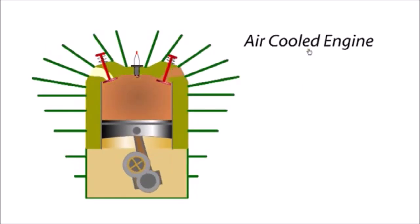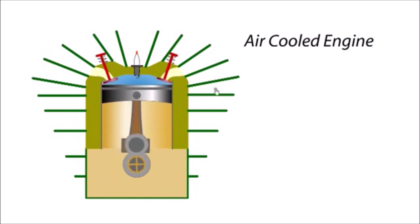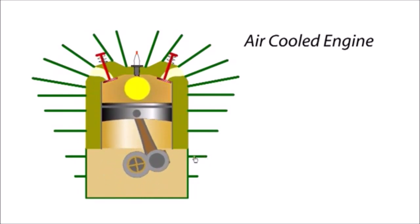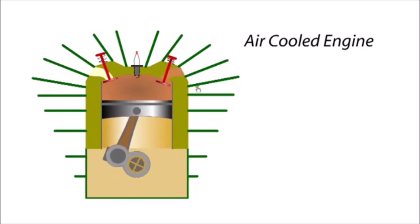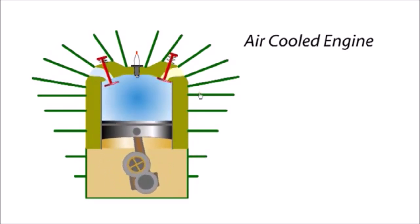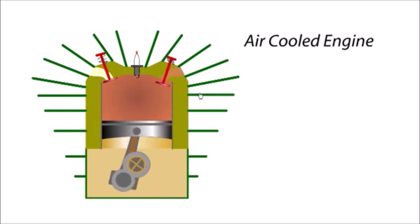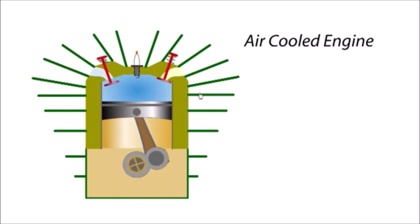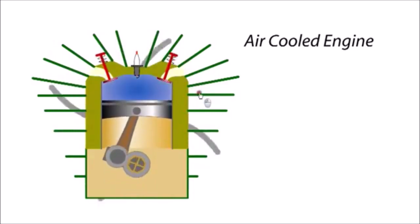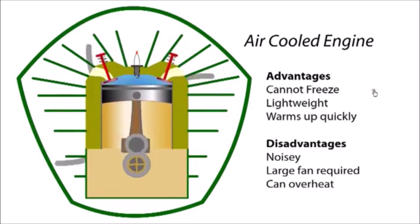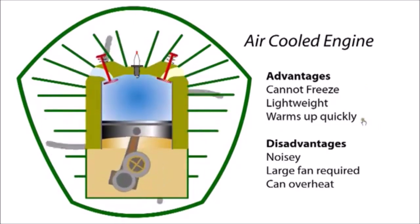In an air-cooled engine, large fins are employed to conduct heat away from the engine. Cooling rate can be controlled by varying the size and spacing of the cooling fins. Since air is a relatively poor coolant and is only one-tenth the thermal conductivity of water, a large fan blows air through a duct to remove heat from the fins. The system is simple and lightweight.